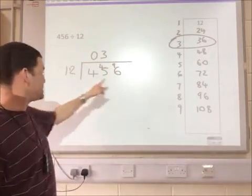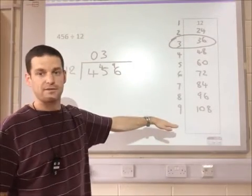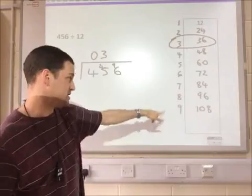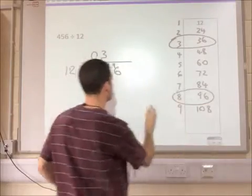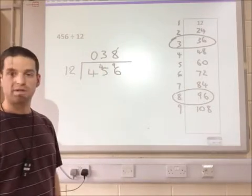And then finally, how many times does 12 go into 96? This is the advantage now of having the tables written out at the side, because I can see straight away that it's eight. So the answer to that one is 38.